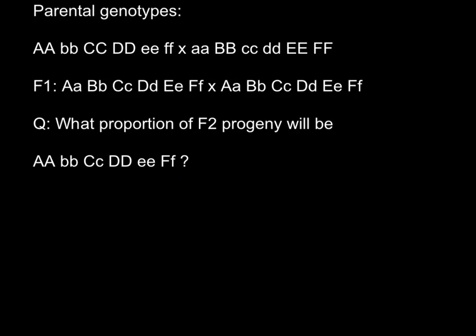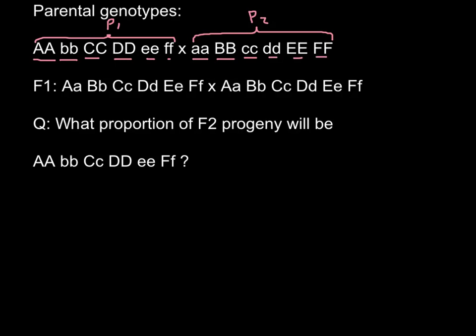So we have to calculate probability, and here is how we are going to do it. This is going to be our parent 1 and this is going to be parent 2. You see parent 1 at loci A is homozygous dominant and parent 2 homozygous recessive, and so on with the rest of the loci. This is how we get F1 generation.